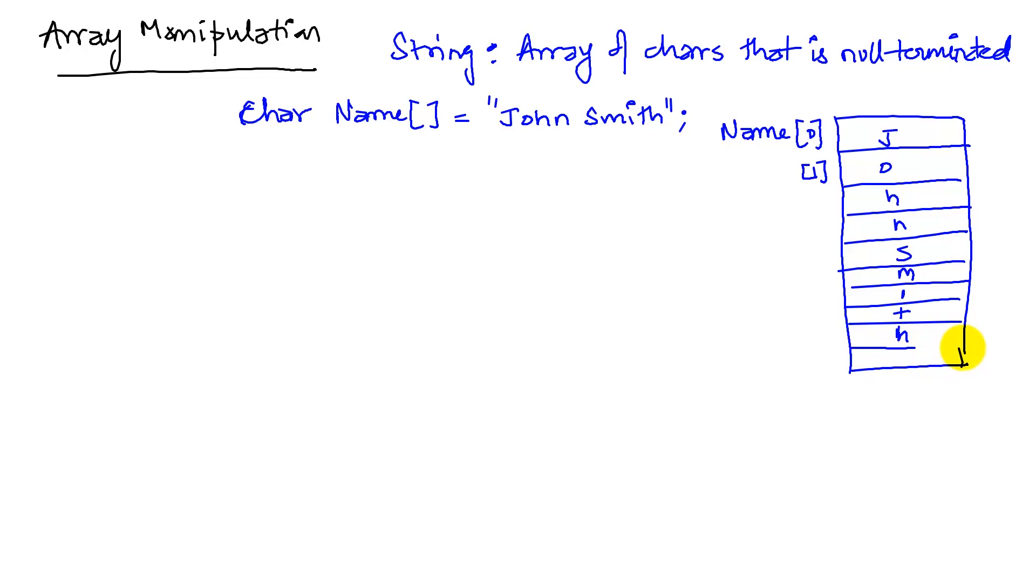The last location anytime you declare an array will have a zero in it. This is what null termination means. So null terminated means that the last element will have a zero. It's automatically inserted by the compiler when it produces the code as a result of this statement.